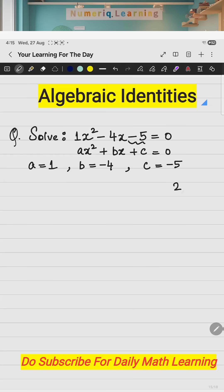Now, you need to look for two numbers which will give you a product and a sum. The product is nothing but multiply a into c. What is a into c? It is 1 into minus 5. That is minus 5. So, you need to find two numbers which when multiplied will give you minus 5 and the sum should be b.